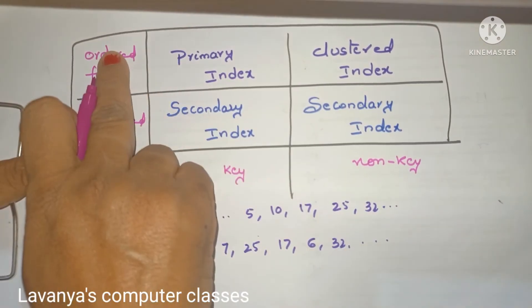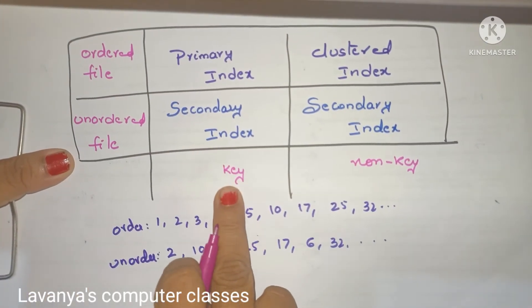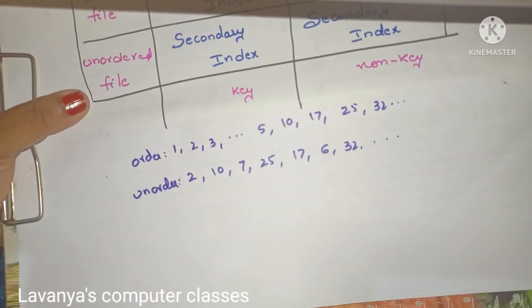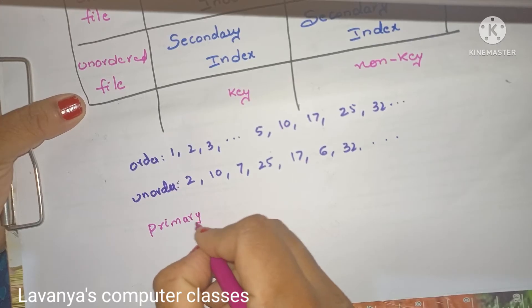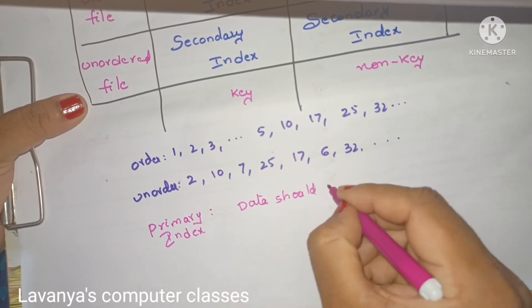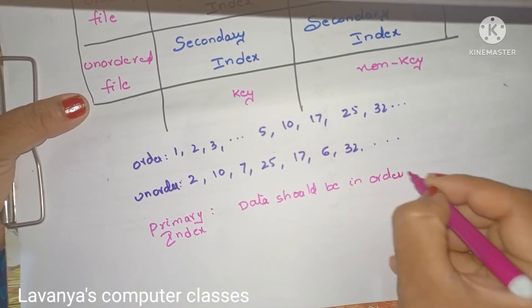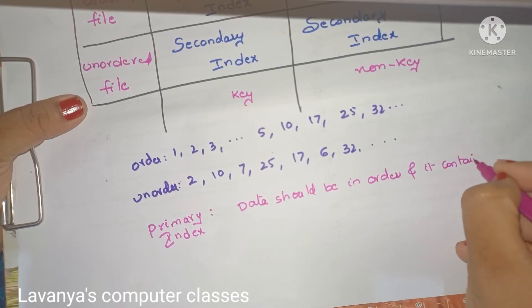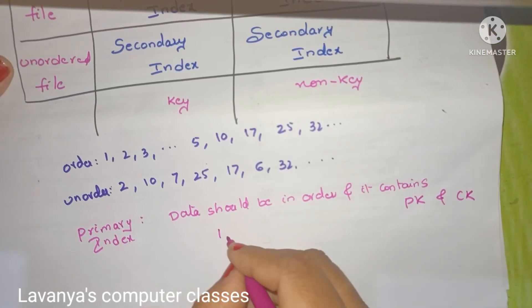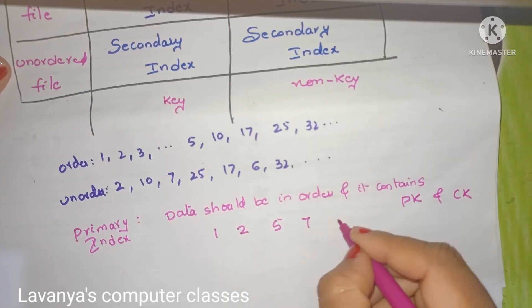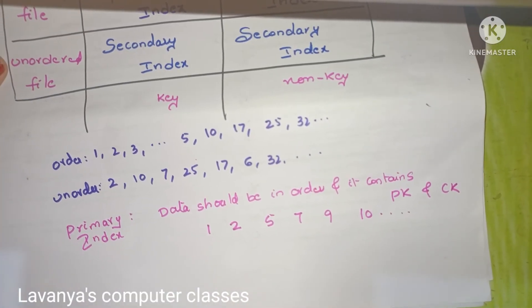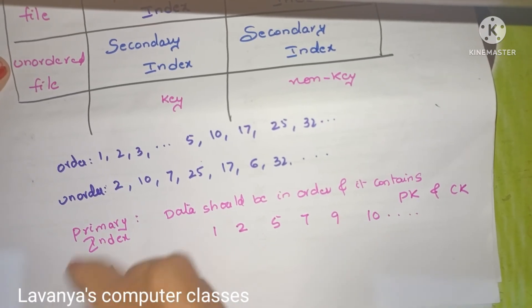For primary index, the data should be in order and it contains either a primary key or candidate key. For example, data in ascending order like 1, 2, 5, 7, 9, 10, and so on — data is in order and no value is repeated. That is why it is called a primary index.